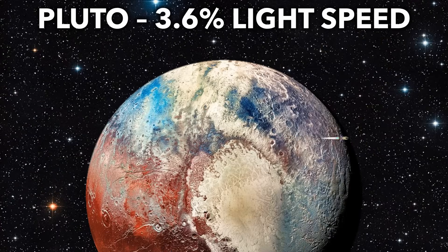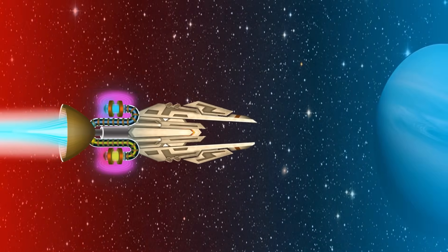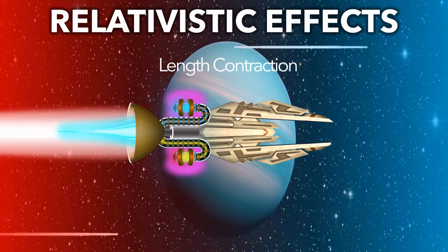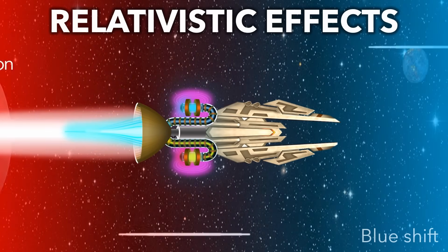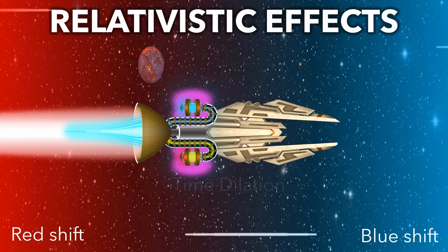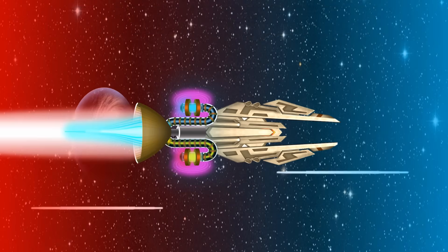After 1.3 years, the ship has reached 70% light speed. At these speeds, relativistic effects make things seem weird on board the ship. The universe seems squashed by 29%, objects ahead appear bluer, and behind appear redder, and even time slows down.